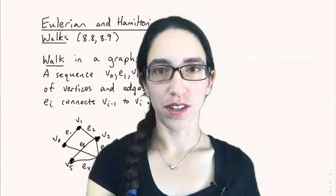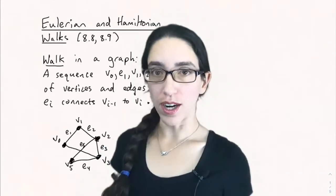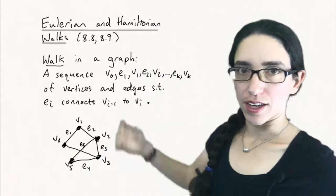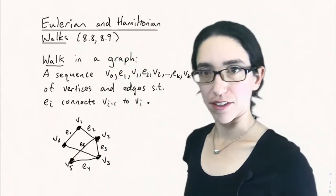Hello and welcome back to Math 301 Combinatorics at CSU. Today we're going to be talking about Eulerian and Hamiltonian walks. These are special types of walks in a graph, and we're covering section 8.8 and 8.9 here, so still in the graph theory chapter.